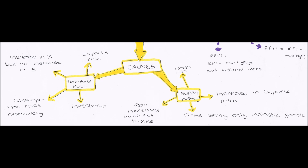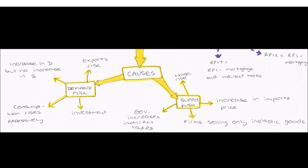Also, if there is a wage rise — and this really should come under demand as well — if there is a wage rise, people can buy more, therefore they will demand more, therefore aggregate demand will increase as consumption increases. So therefore the price level rises from P1 to P2, and therefore inflation occurs as inflation is a rise in price.